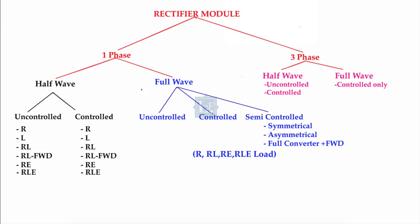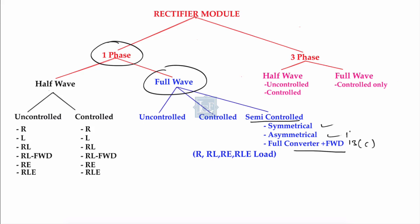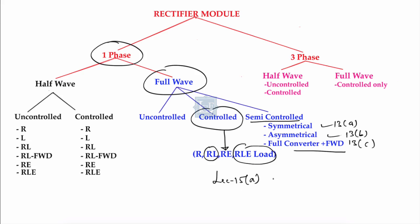In the previous lecture we covered single-phase full wave semi-controlled rectifier — symmetrical, asymmetrical, and full converter with freewheeling diode (lecture 13c, 13b, 13a). We also covered single-phase controlled rectifier for R-type, RL-type, and RLE-type loads. In this lecture, lecture 15a, we will solve some previous year GATE problems from 1991 to 2008.